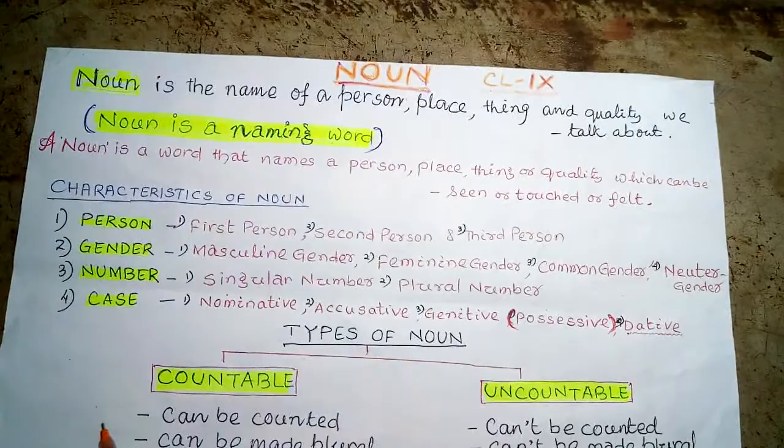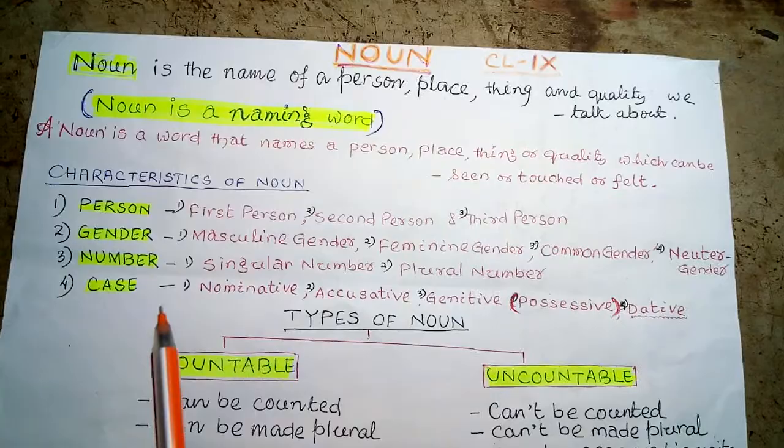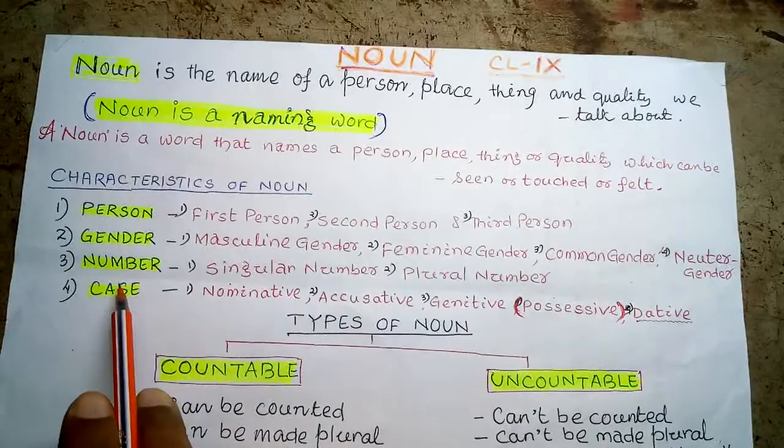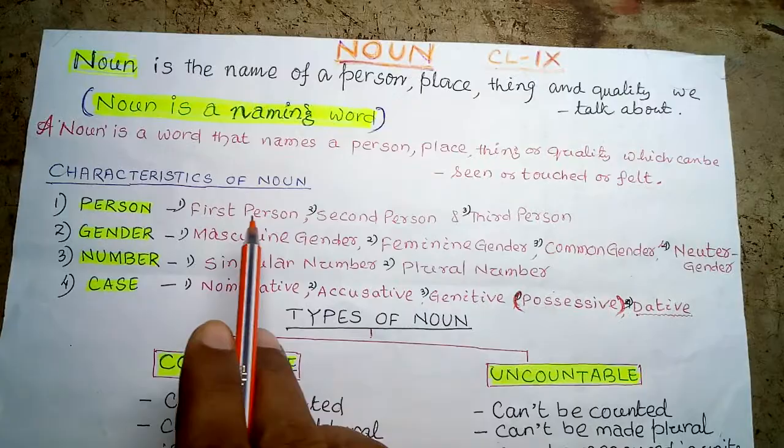The noun has four characteristics: person, gender, number, and case. Person is of three types: first person, second person, and third person.